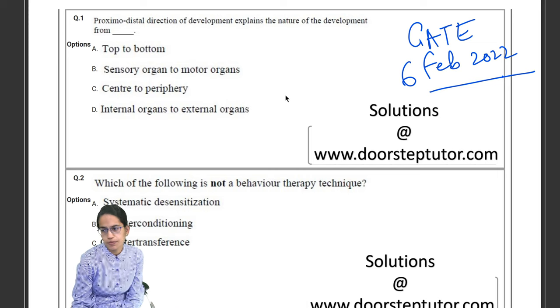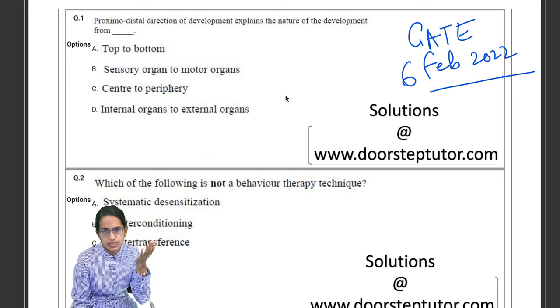This is the GATE psychology paper for 6 February 2022. Now the questions that we have seen are actually not that difficult, but most of the questions are from the applicative aspects, predominantly the sections relating to personality.